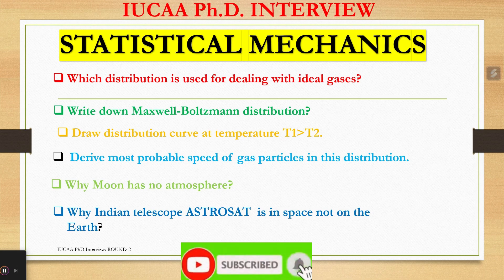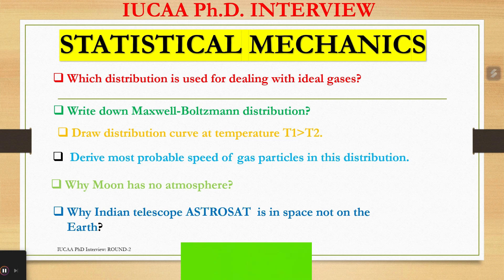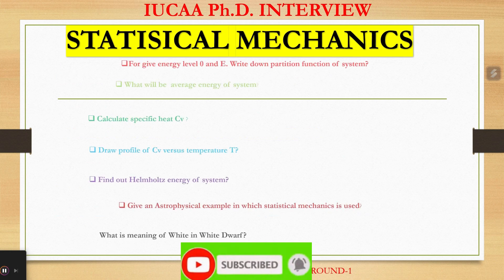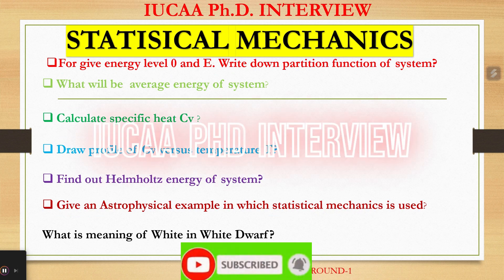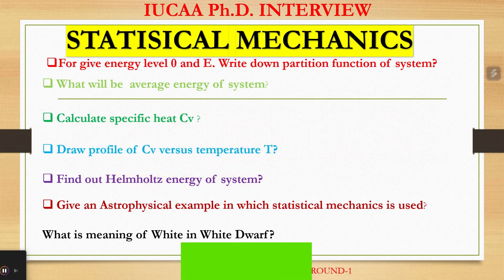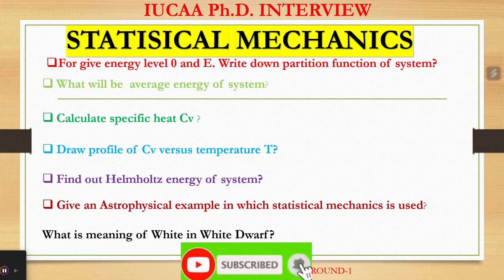Why Indian telescope ASTROSAT is in space not on the earth? For given energy levels 0 and E, write down partition function of system. What will be average energy of system? Calculate specific heat CV. Draw profile of CV versus temperature T. Find out Helmholtz energy of system. Give an astrophysical example in which statistical mechanics is used. What is meaning of white in white dwarf?